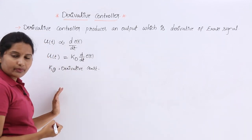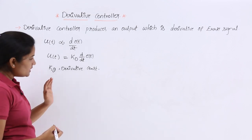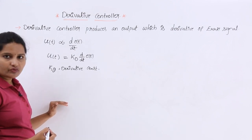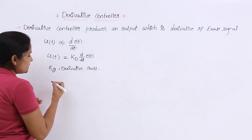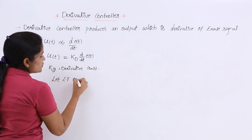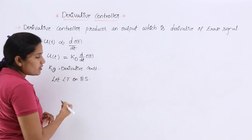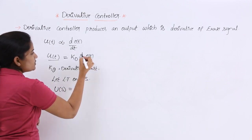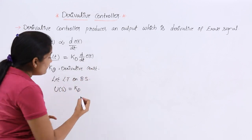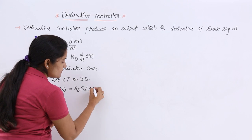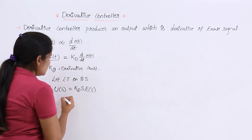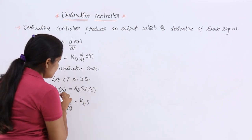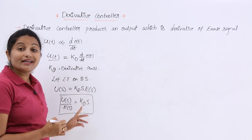As we did for the proportional controller, I am taking the Laplace transform on both sides, because the next step is to calculate the transfer function of the derivative controller. By taking the Laplace transform on both sides, u(t) becomes U(s) = Kd × s × E(s), since d/dt of e(t) transforms to s·E(s). Now, U(s)/E(s) = Kd × s.